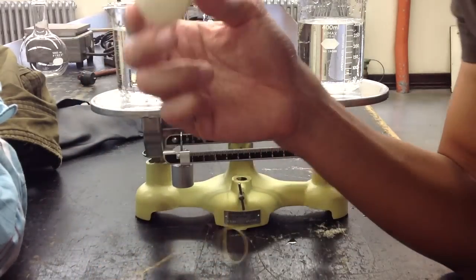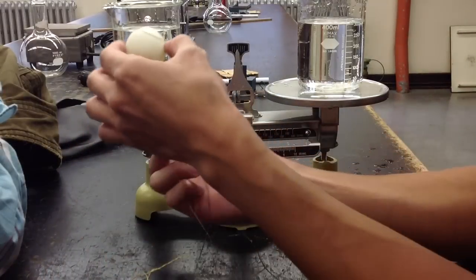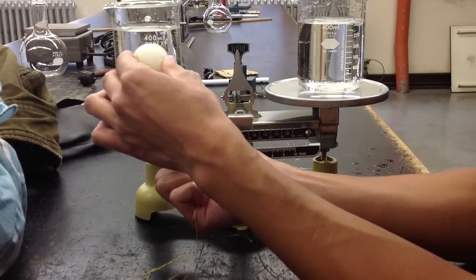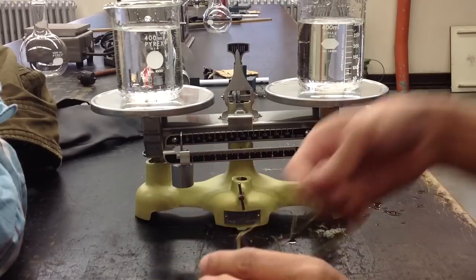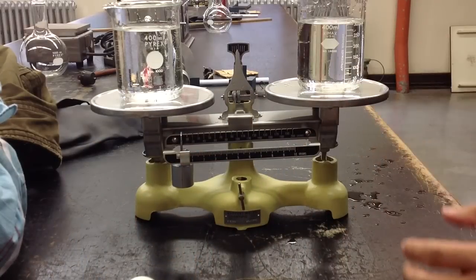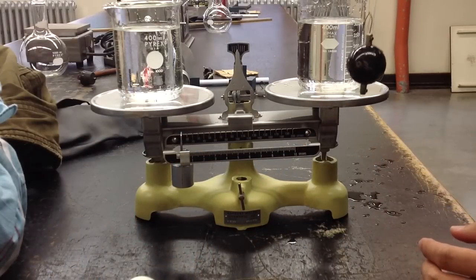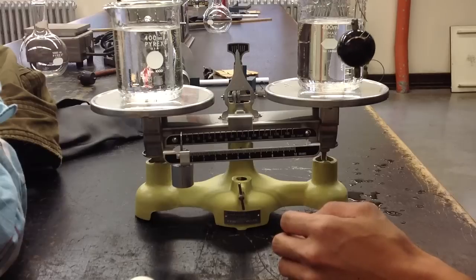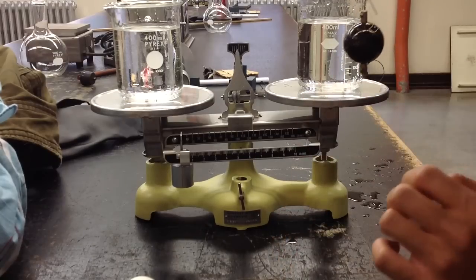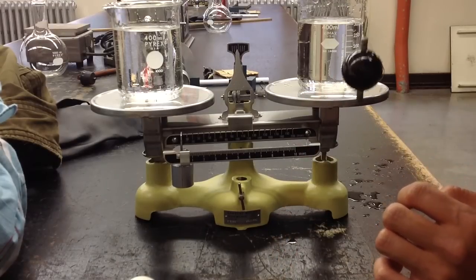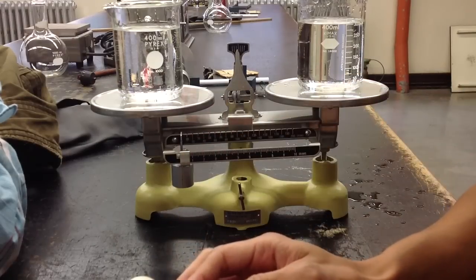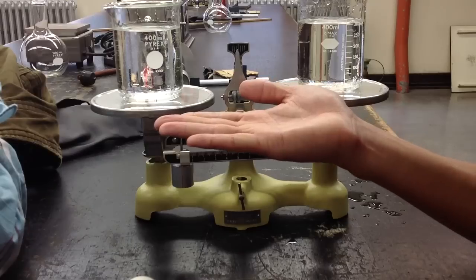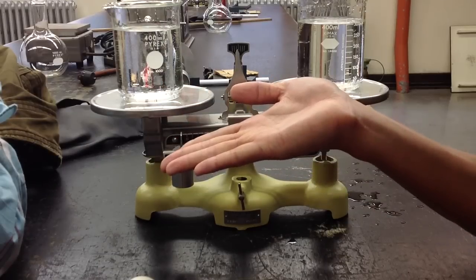Here the problem states if I tie a ping pong ball down to the bottom of the beaker such that it stays submerged, and if I submerge a steel ball on the right side such that it's being held up by the string and it's not touching the bottom of the beaker, yet it's still submerged in the water, which side will go down? Will it tilt right down or left down?